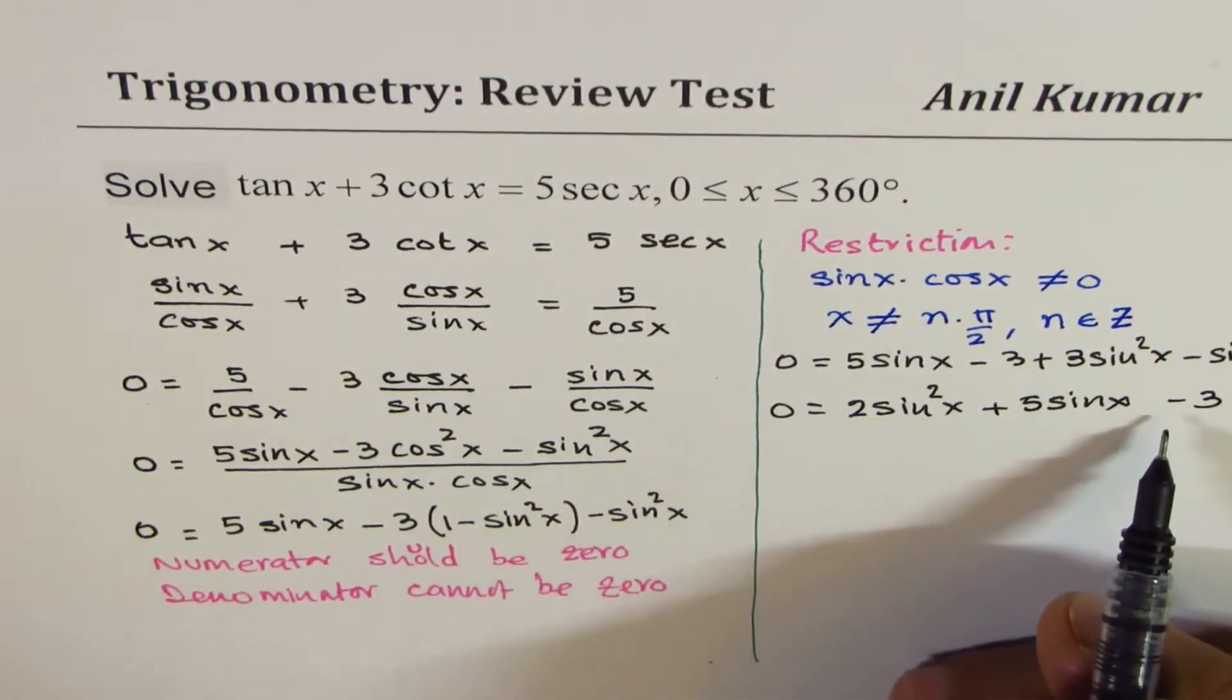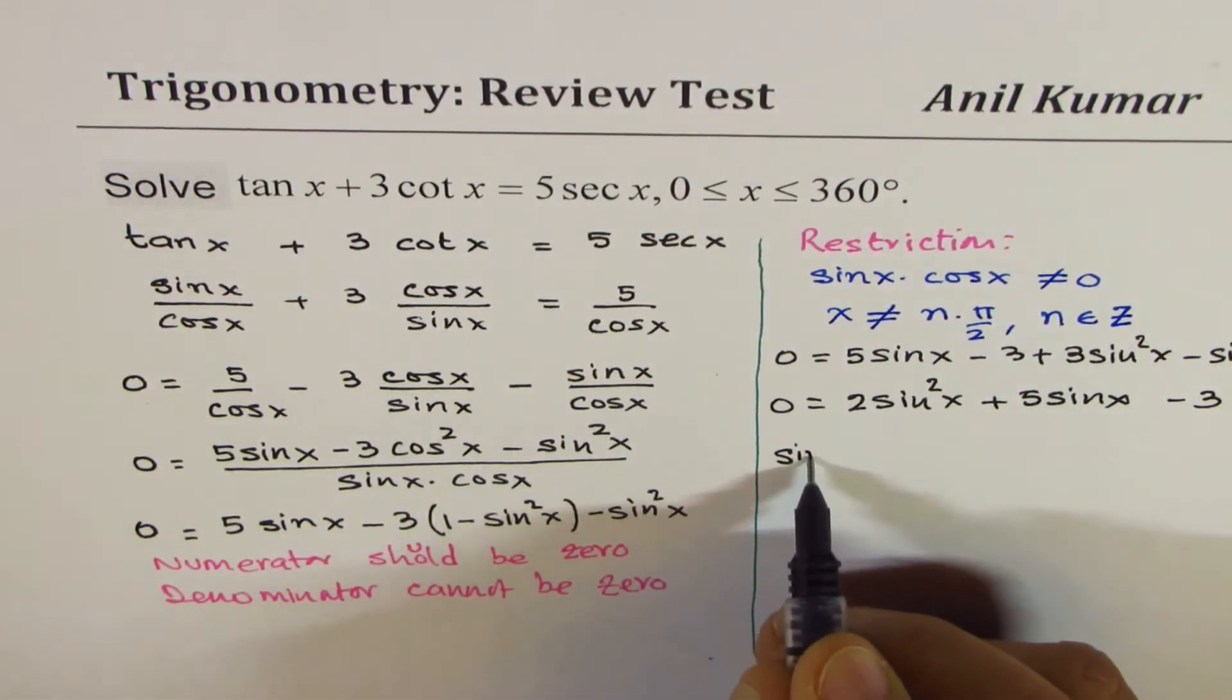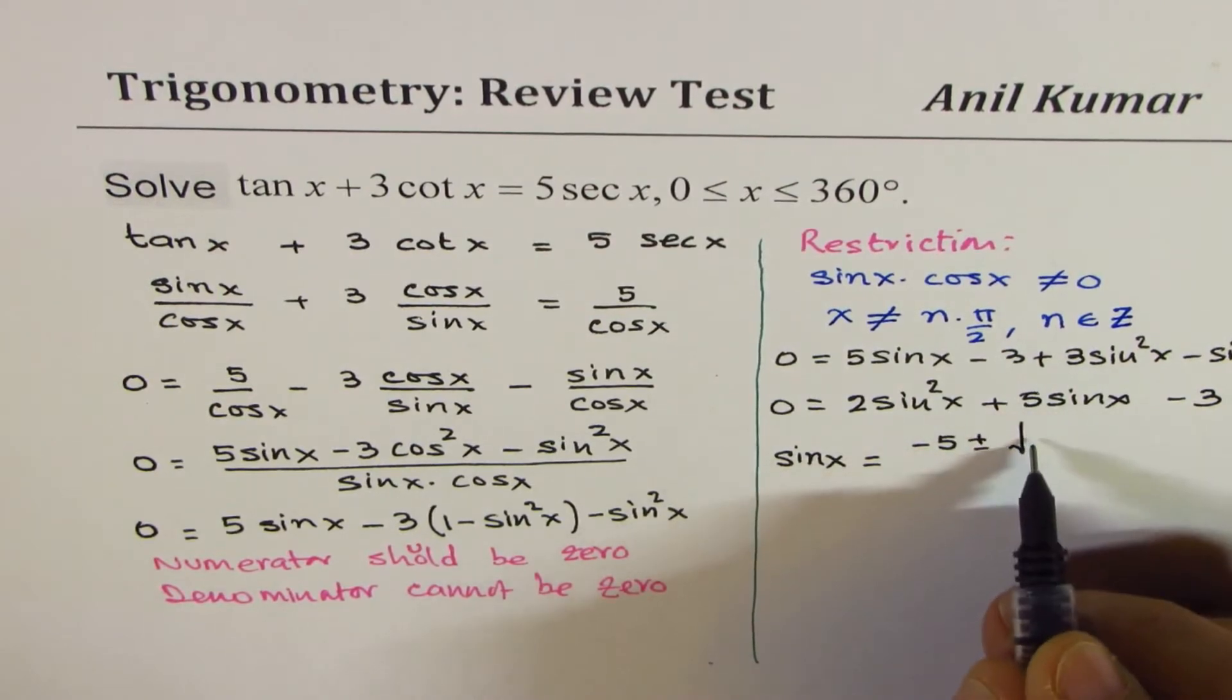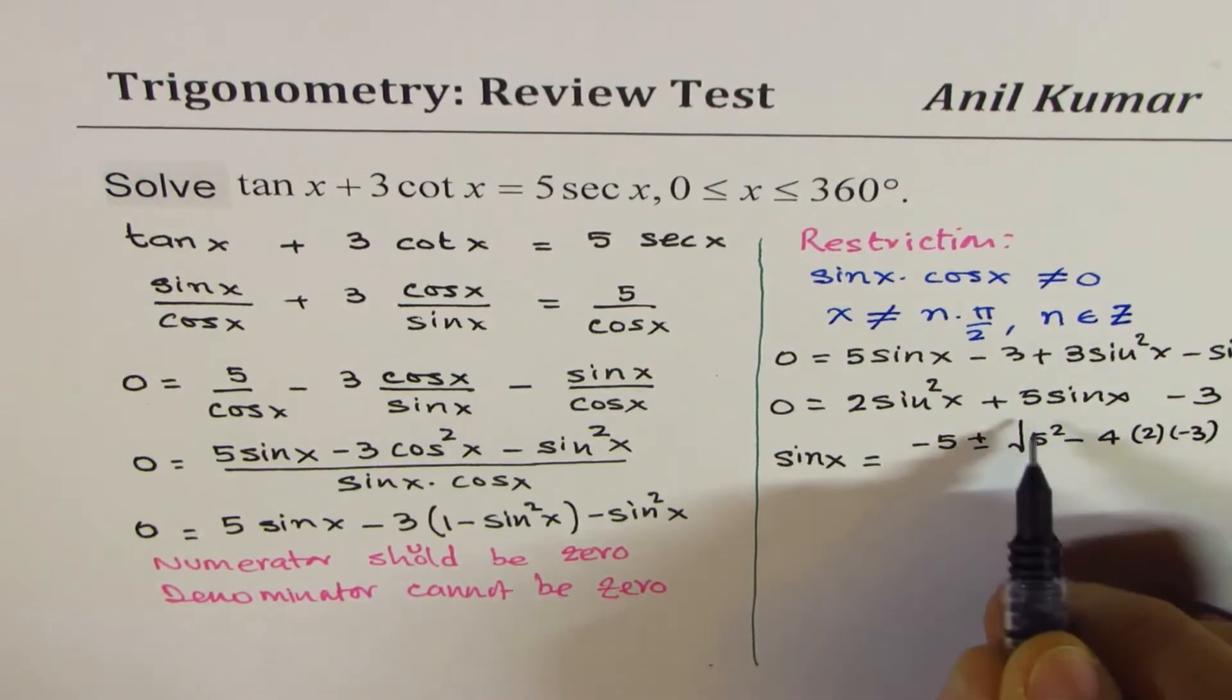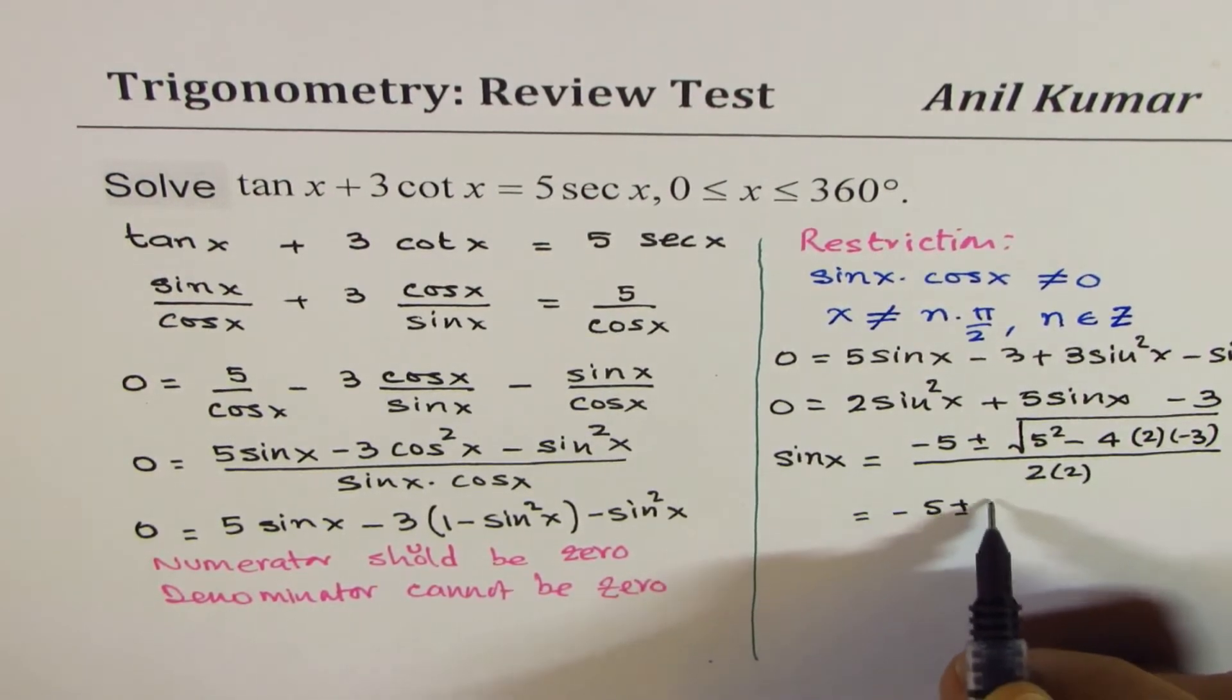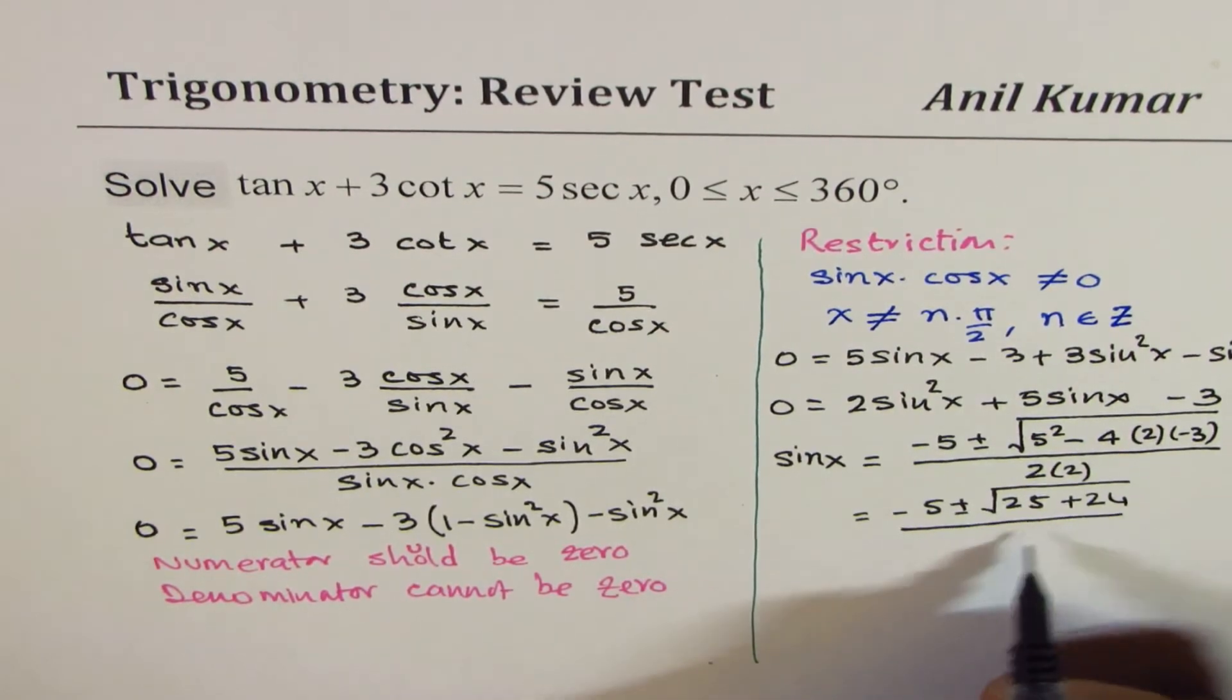Now that is a quadratic equation in sine x, so we can use quadratic formula here to find the value of sine x. So what we get here is, sine x is equal to minus b, which is minus 5, plus minus, square root of 5 squared, minus 4, a is 2, c is minus 3. So that gives you minus 5, plus minus, square root of 25, plus minus, minus makes it plus, 8 times 3 is 24, over 4.